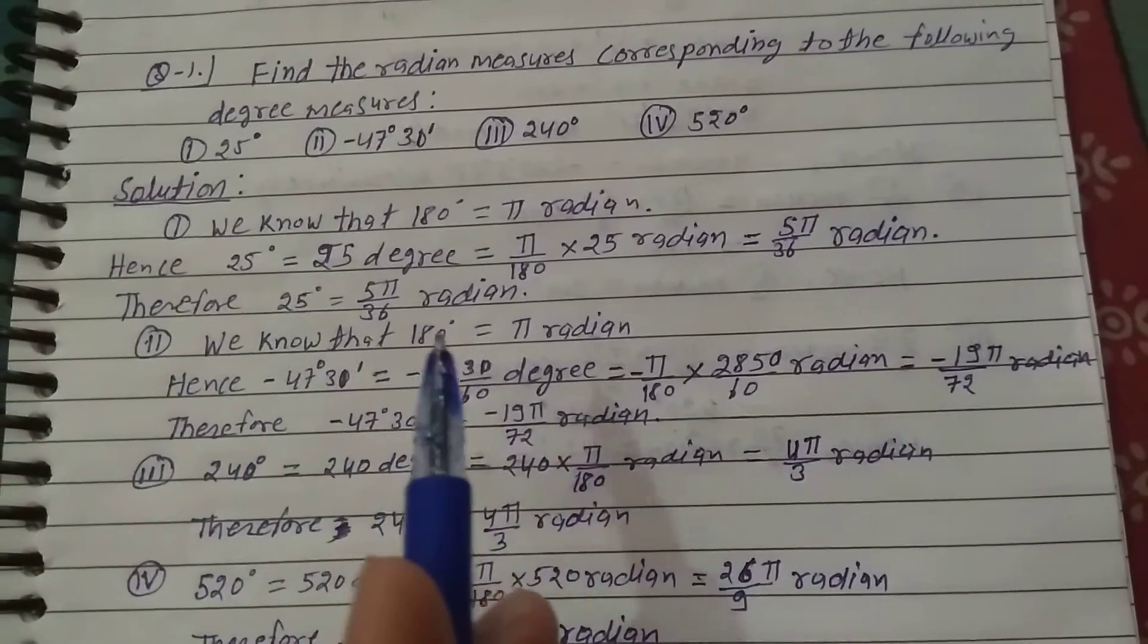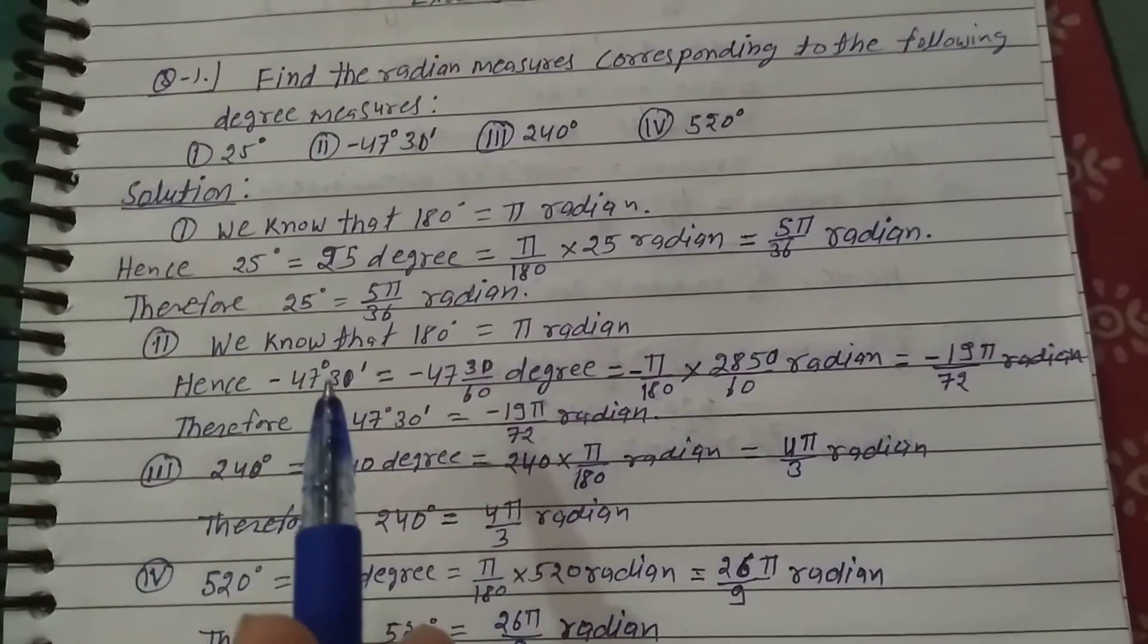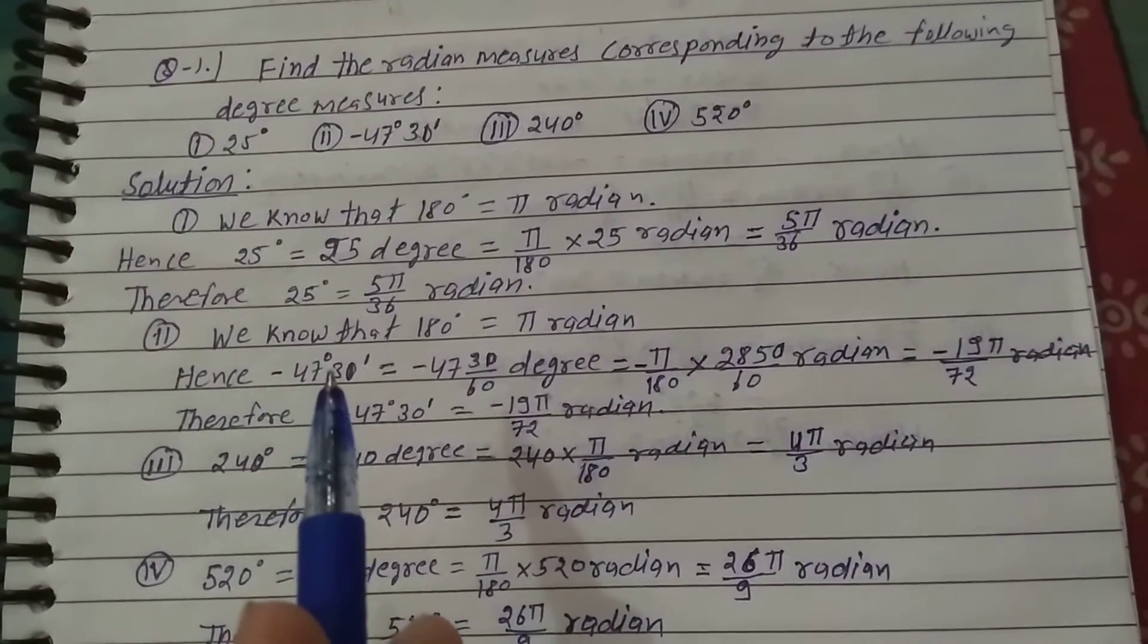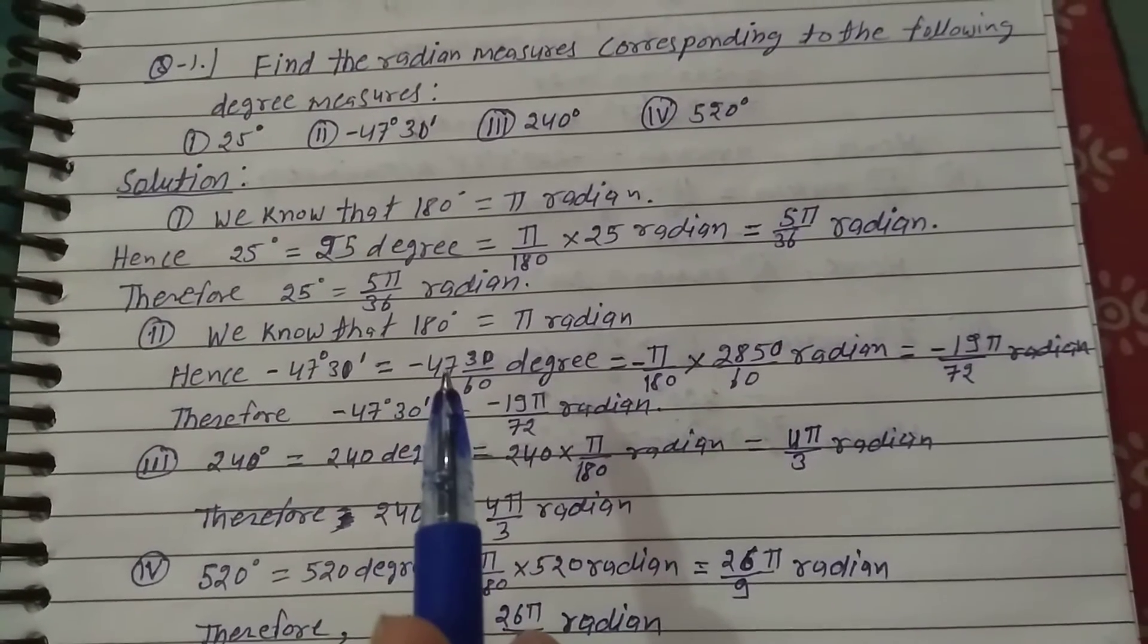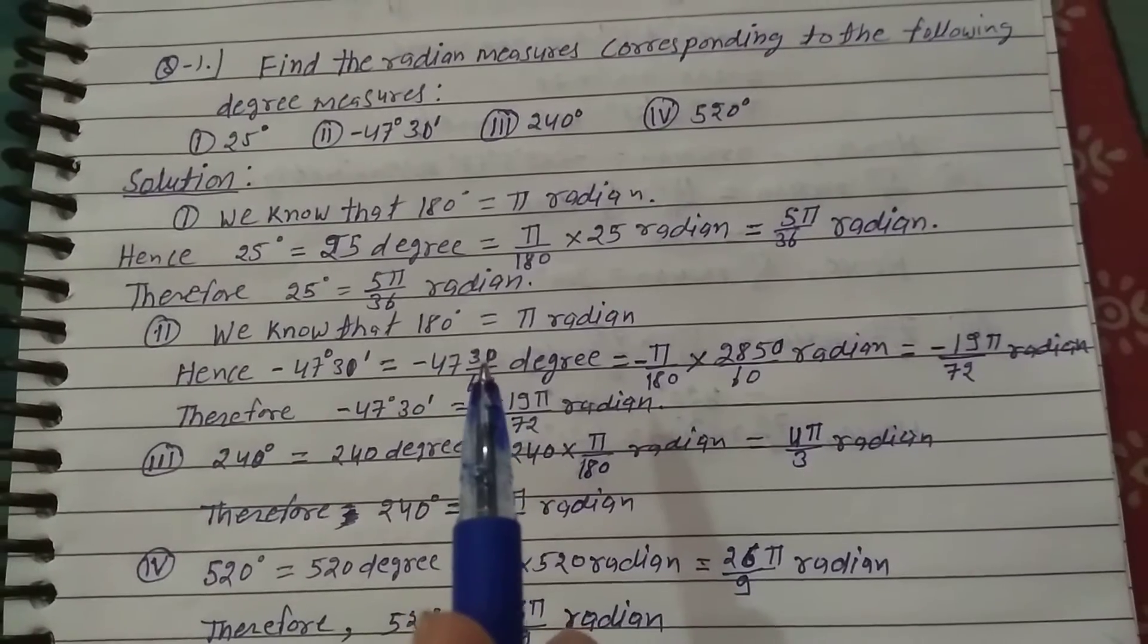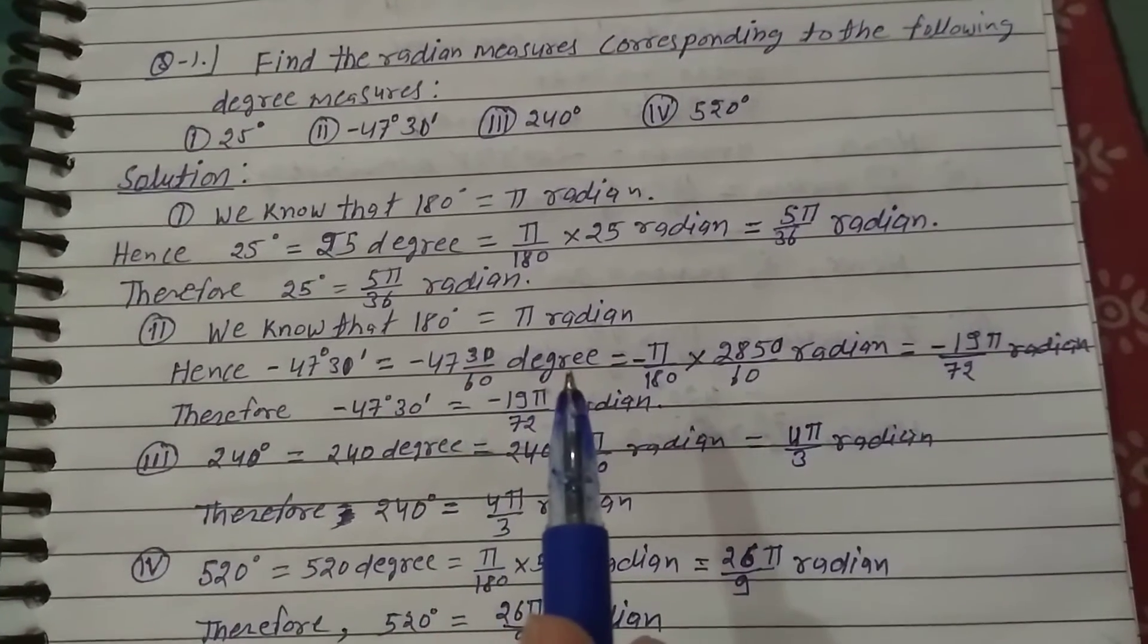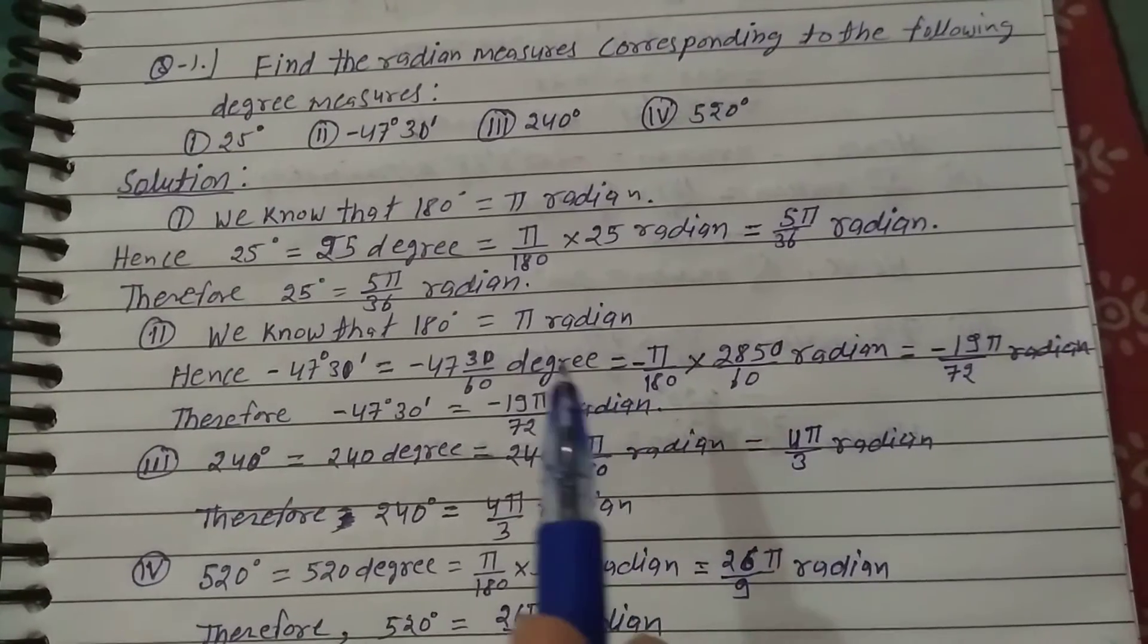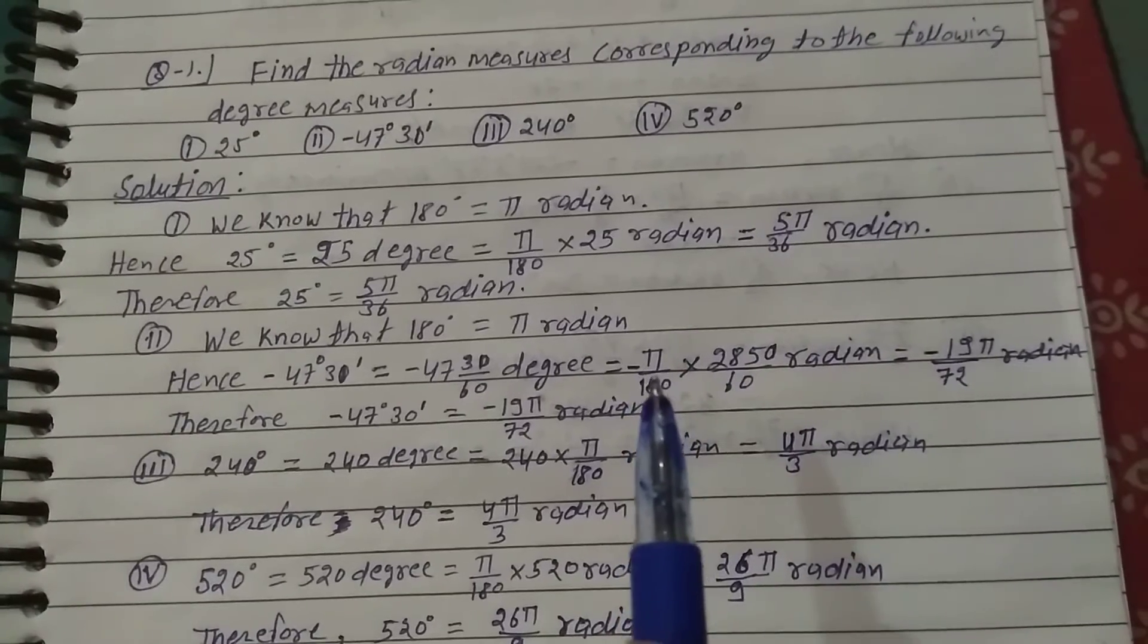Second: We know that 180 degrees equals π radians. Hence, -47 degrees 30 minutes equals -47.5 degrees, since 30 minutes equals 30/60 degrees.